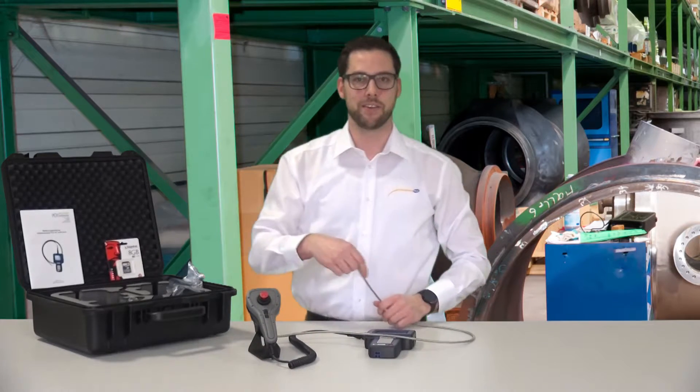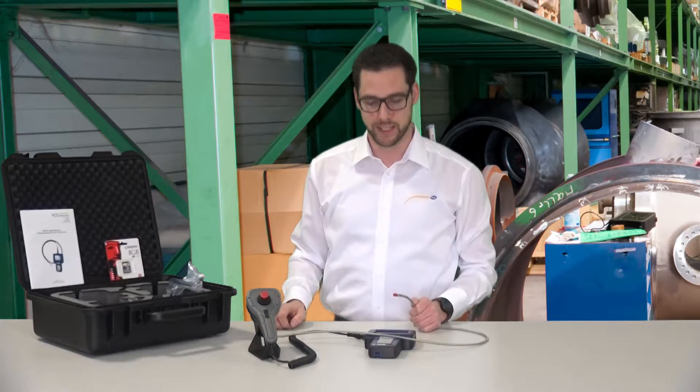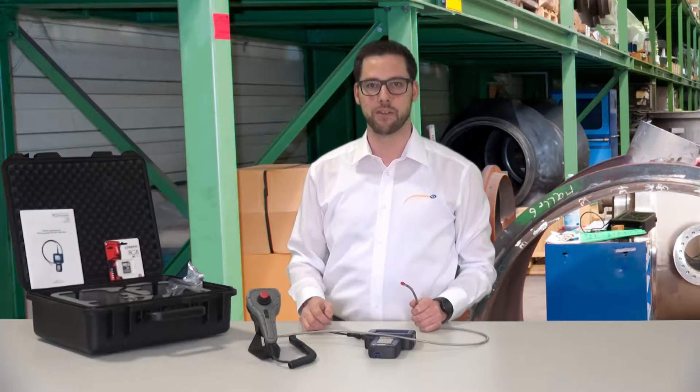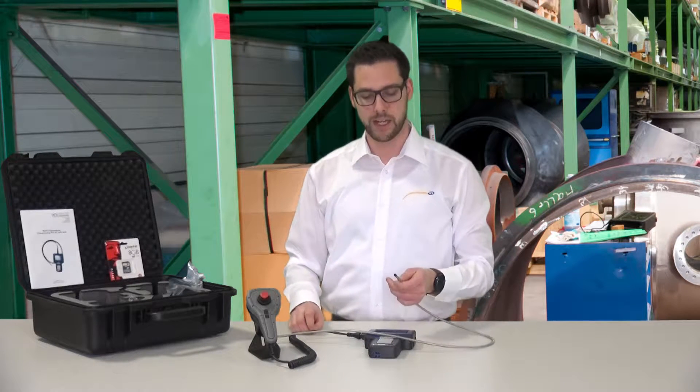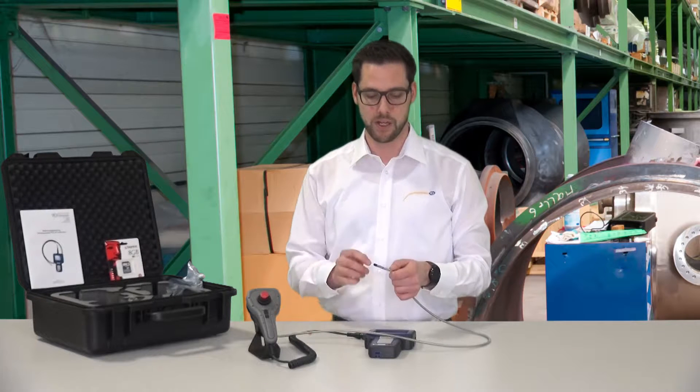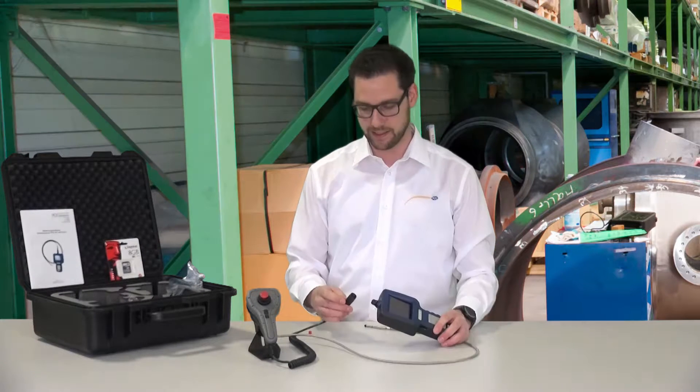The endoscope is ideal for inspections in industry and craft and can save pictures and videos on the handset. The diameter of the camera cable is 6mm and the resolution of the camera is 640x480 pixels. The lighting of the cable on the camera head is with 4 LEDs at the front and 2 LEDs at the side. I will show you this in detail later on the endoscope itself.